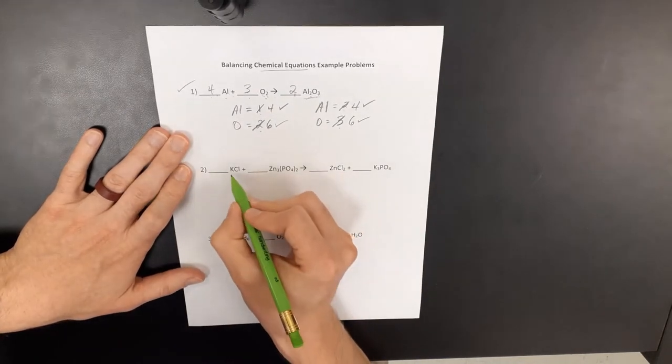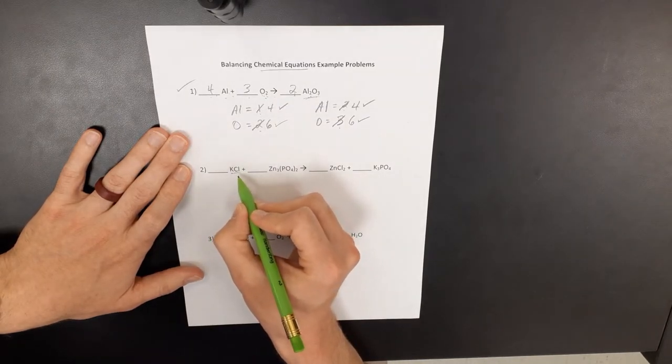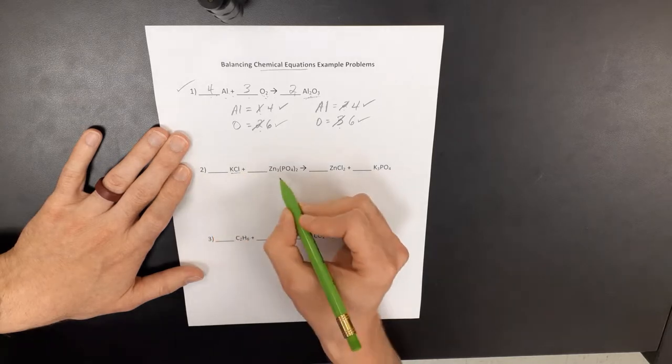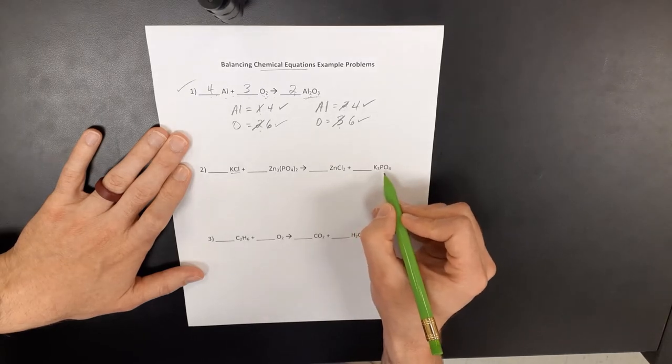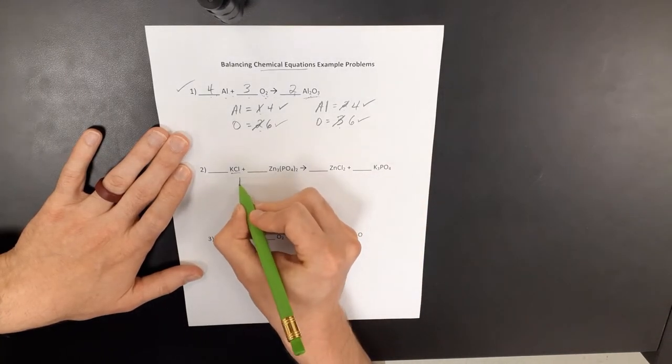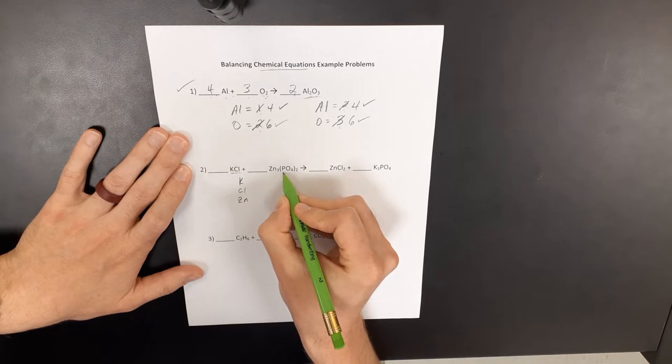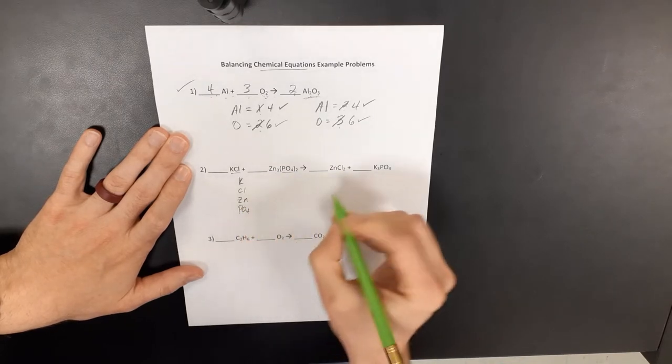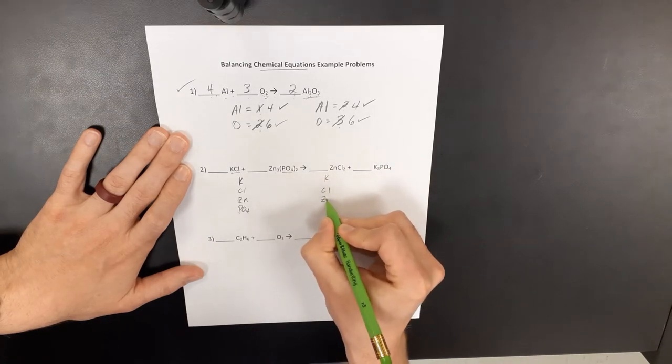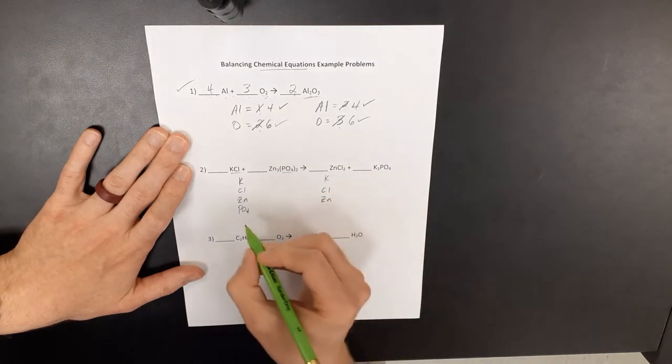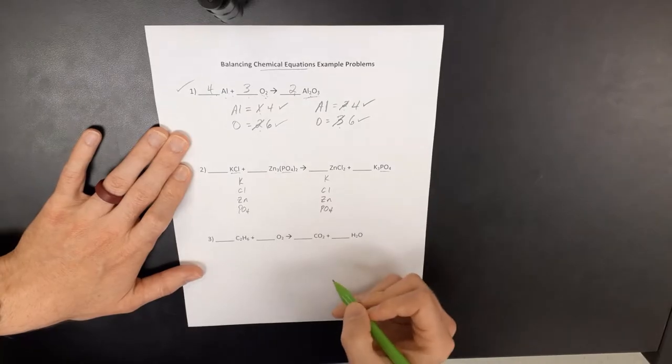All right, come down to this next one. This is potassium chloride. That can be confusing. This is not potassium carbon iodine. This is potassium chloride plus zinc phosphate yields zinc chloride plus potassium phosphate. And so I have potassium, I have chlorine, I have zinc. And you see this phosphate, this PO4, it exists as a polyatomic ion.